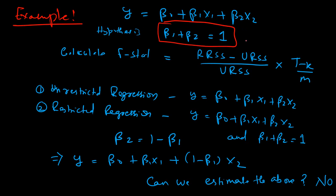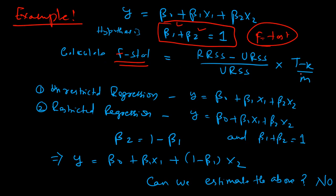This is considered as some sort of a restriction on the regression, and there are two parameters — beta 1 and beta 2. So we cannot use t-test; we have to use the F-test. The F-statistic is calculated as: the restricted residual sum of squares minus the unrestricted residual sum of squares, divided by the unrestricted residual sum of squares, multiplied by (T minus k) divided by m. I will talk about these notations in detail.